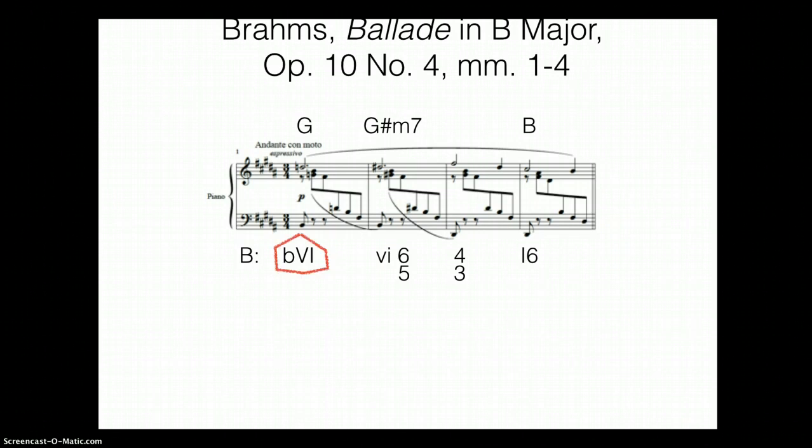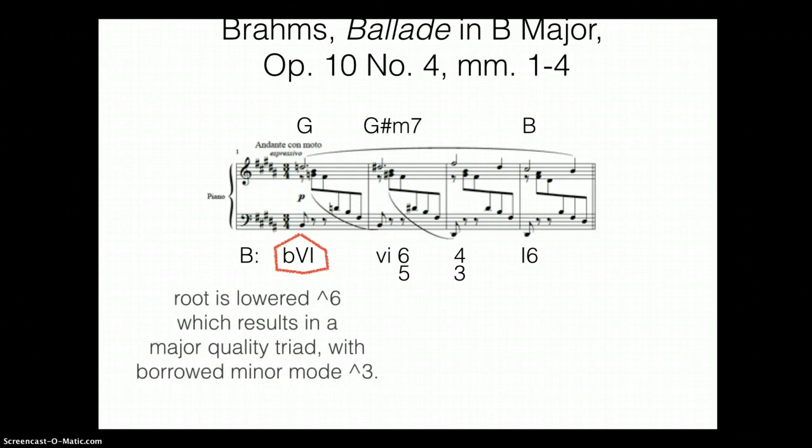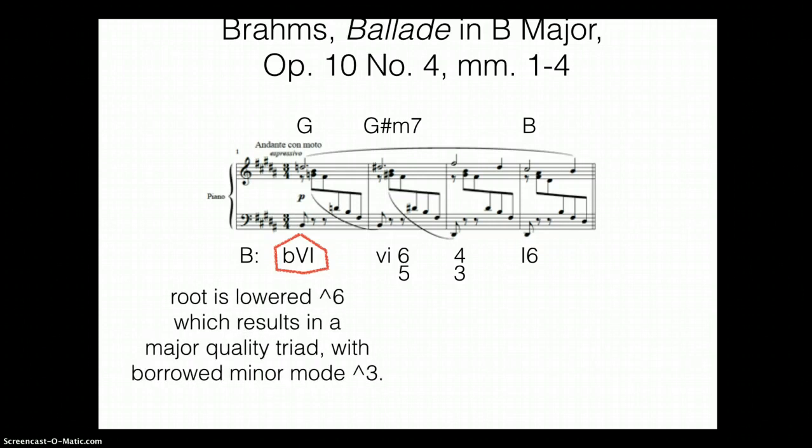So let's talk a little bit about that borrowed chord, flat major six. Why is there a flat out in front of the Roman numeral? Well, it's because the root has been lowered, right? It's not normal scale degree six la. We're actually using lay or G as the root. So the flat out in front of the Roman numeral says, I've lowered the starting note. I've lowered the root of this chord.